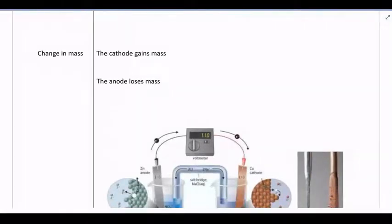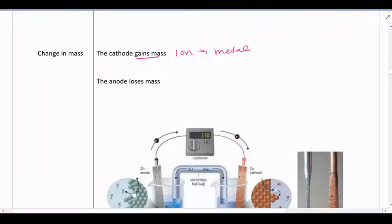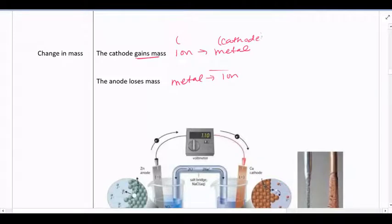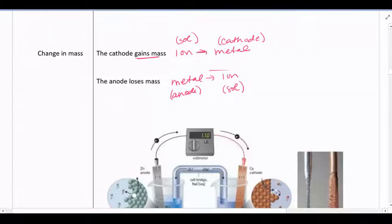We also see a change in mass at each electrode. The cathode gains mass because we're going from ion to metal. The anode loses mass because we're going from metal to ion. The metal is always part of the electrode, and the ion is always part of the solution. When the reaction happens at the cathode, the ion is becoming part of the cathode, and vice versa for the anode — the metal becomes part of the solution as it turns into a cation.